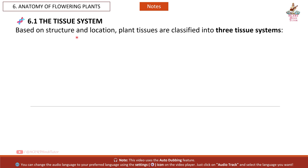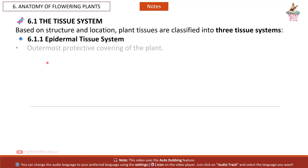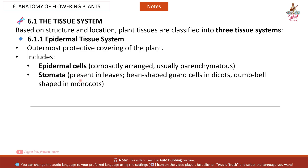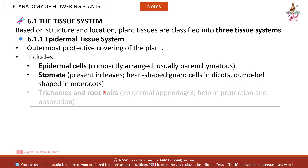Section 6.1: The Tissue System. Based on structure and location, plant tissues are classified into three tissue systems. The first is the Epidermal Tissue System — the outermost protective covering of the plant. It includes epidermal cells, compactly arranged and usually parenchymatous. Stomata are present in leaves, with bean-shaped guard cells in dicots and dumbbell-shaped guard cells in monocots. Trichomes and root hairs are epidermal appendages that help in protection and absorption.